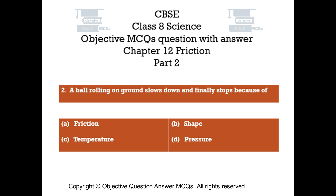Question number 2: A ball rolling on the ground slows down and finally stops because of? Option A: Friction. Option B: Shape. Option C: Temperature. Option D: Pressure.